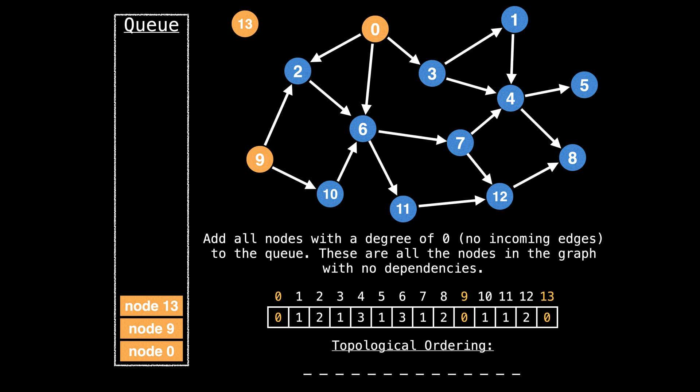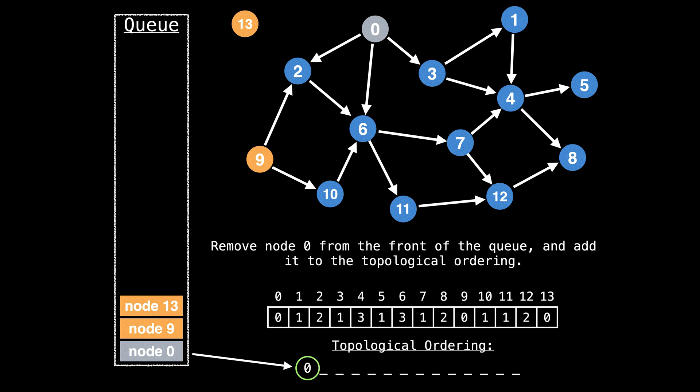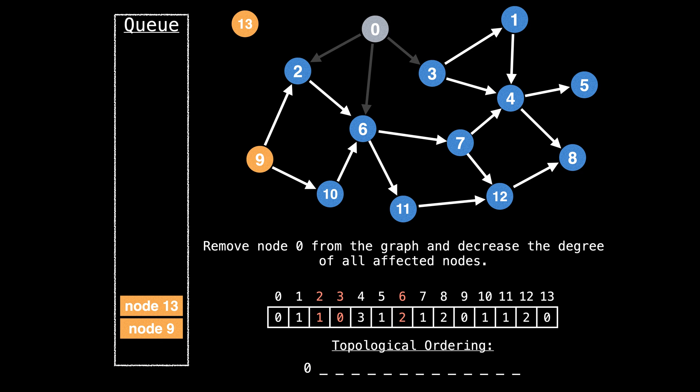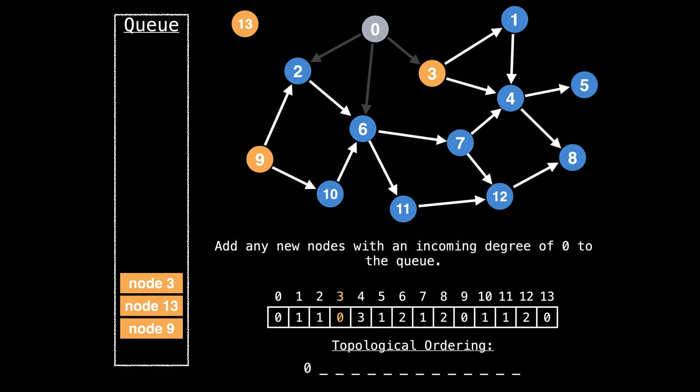Let's go ahead and add all the nodes with a degree of zero to the queue. For now, that includes nodes zero, nine, and 13. Once we finish initially adding all the nodes with no dependencies to the queue, so long as the queue is not empty, we remove the node from the front of the queue and add it to the topological ordering. Here we remove node zero from the front of the queue and add it to the topological ordering. Now remove node zero from the graph and decrease the degree of all affected nodes — nodes two, six, and three have all decreased by one. Node three now has no more dependencies, so we can add it to the queue.